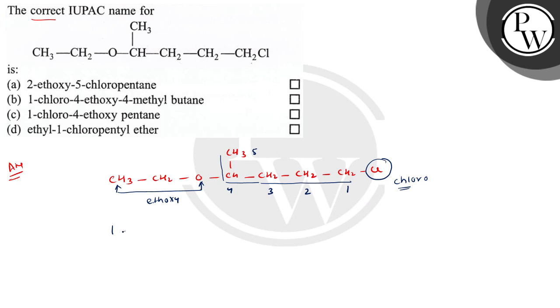The nomenclature will be 1-chloro, 4-ethoxy. And there are 5 carbon atoms, so it is pentane.